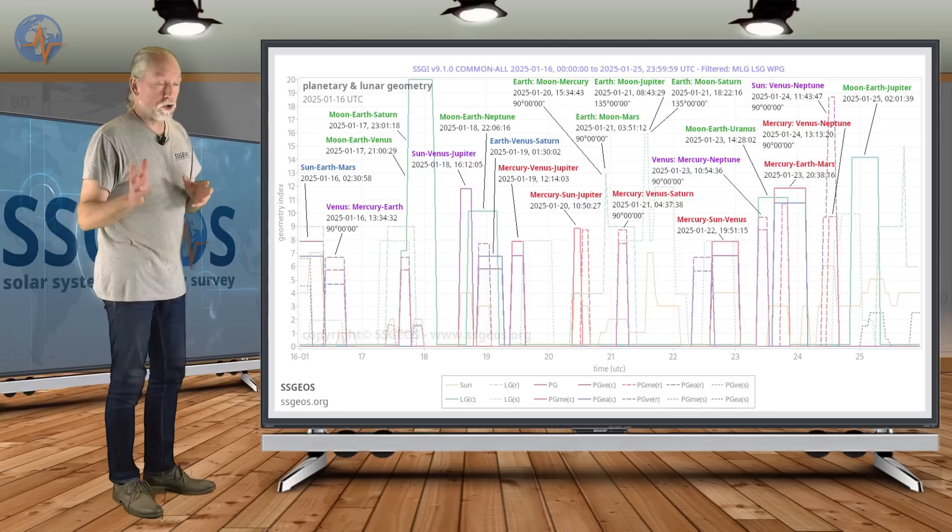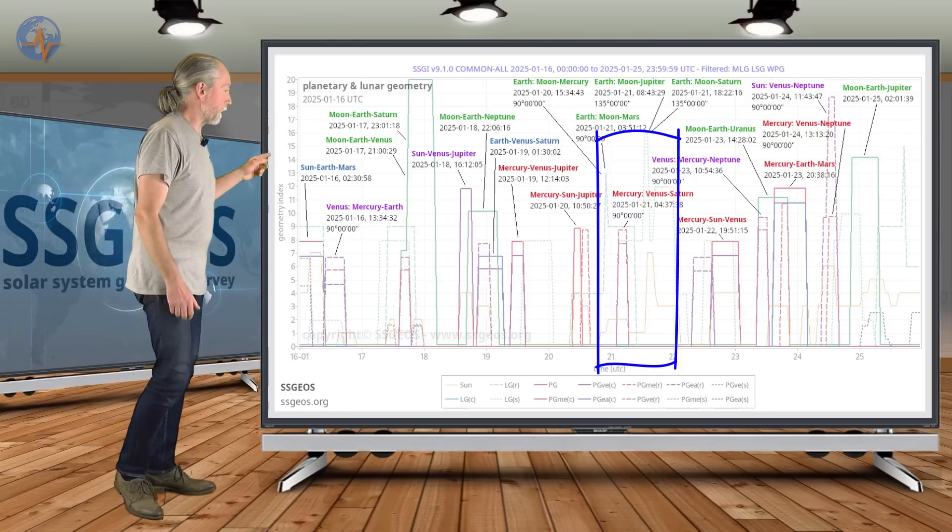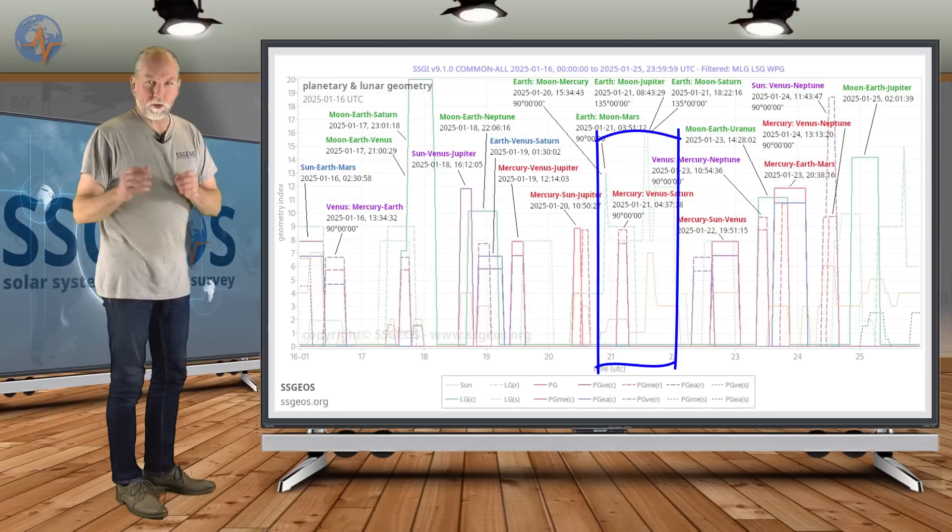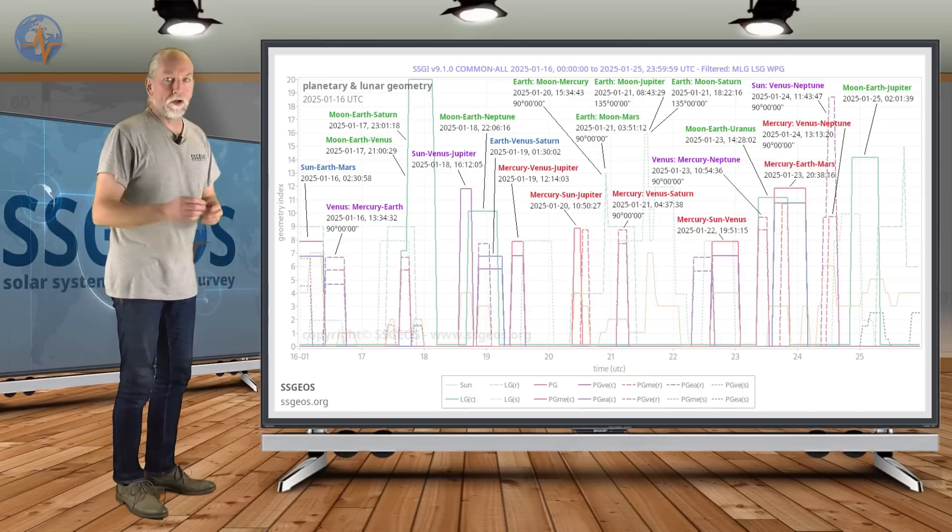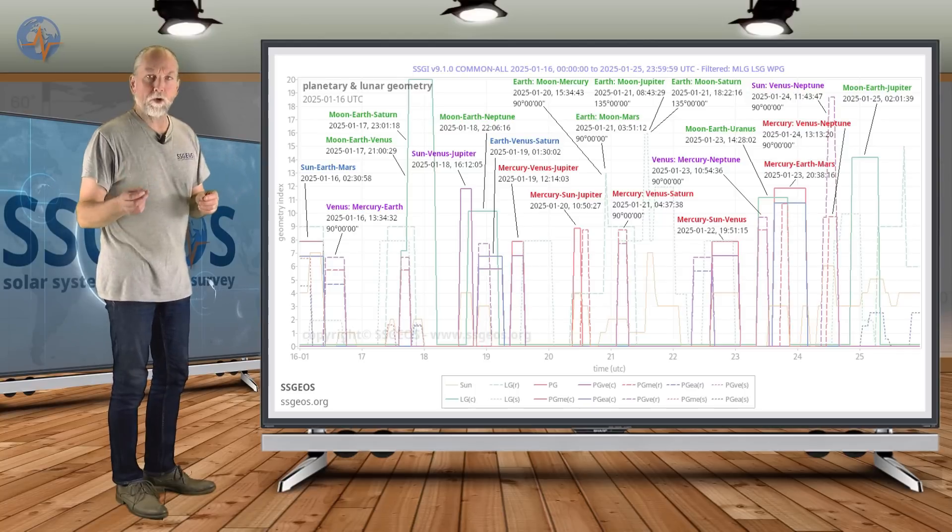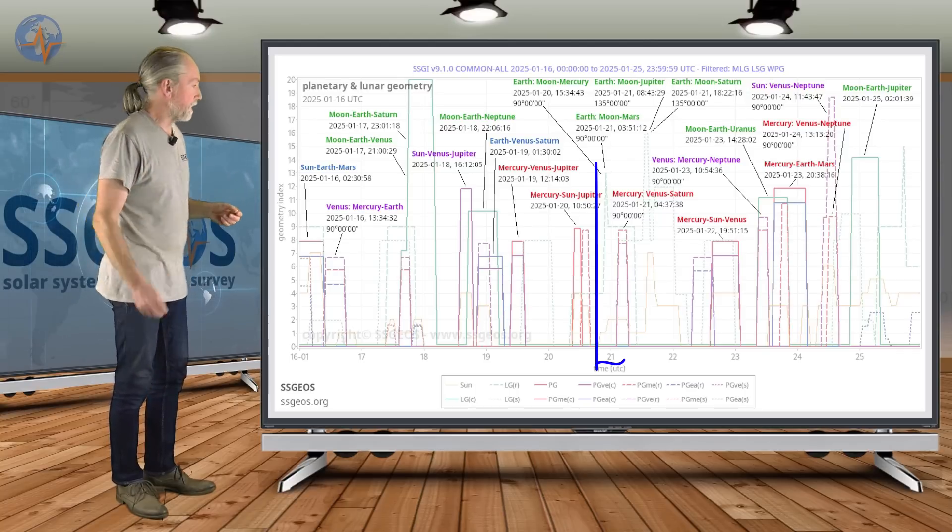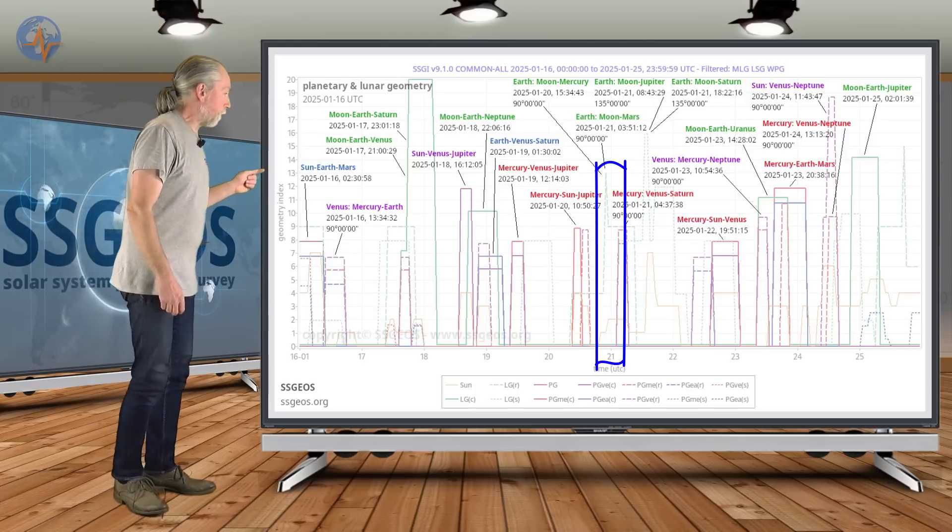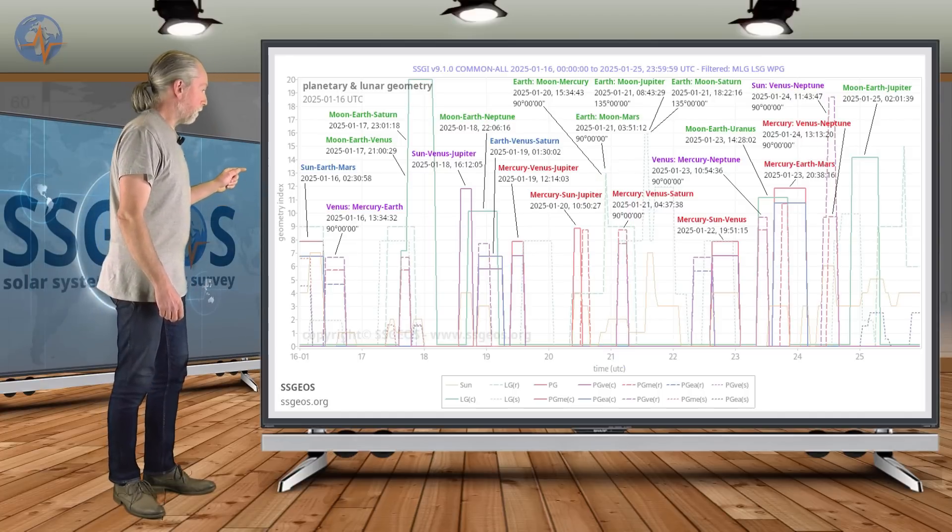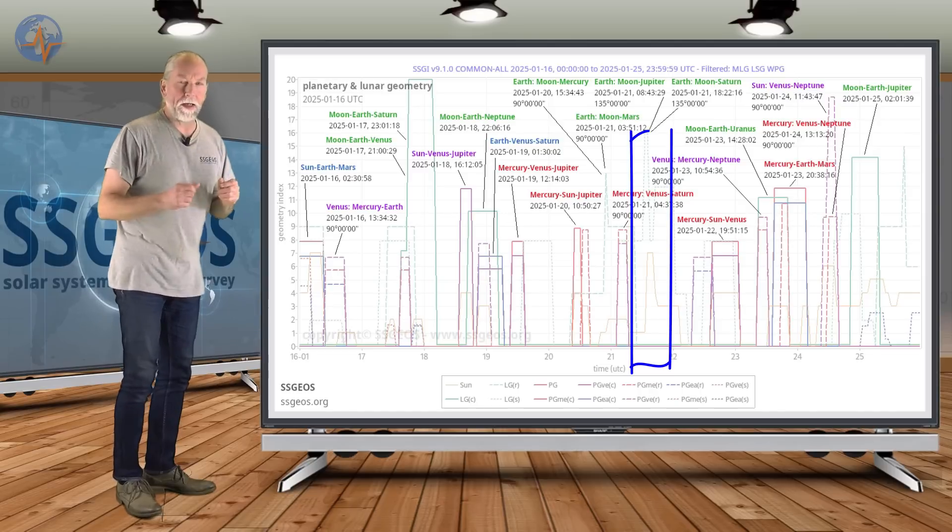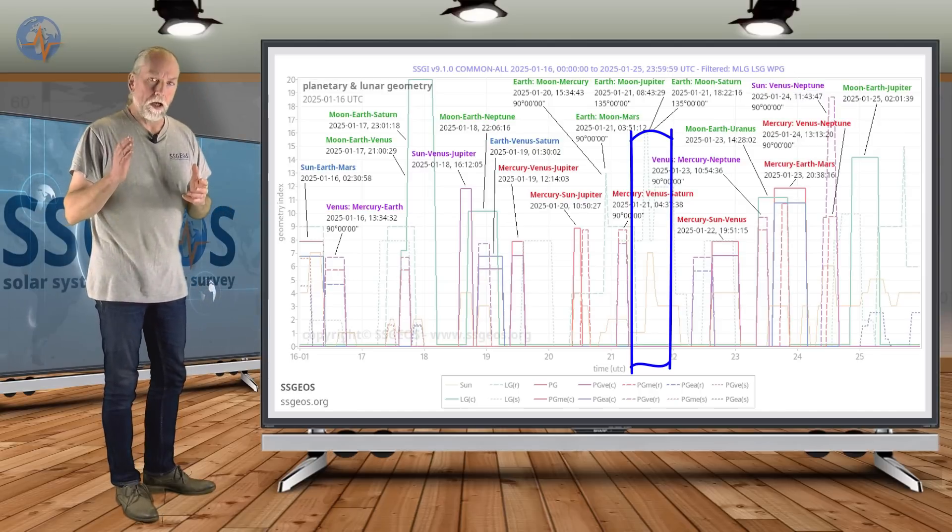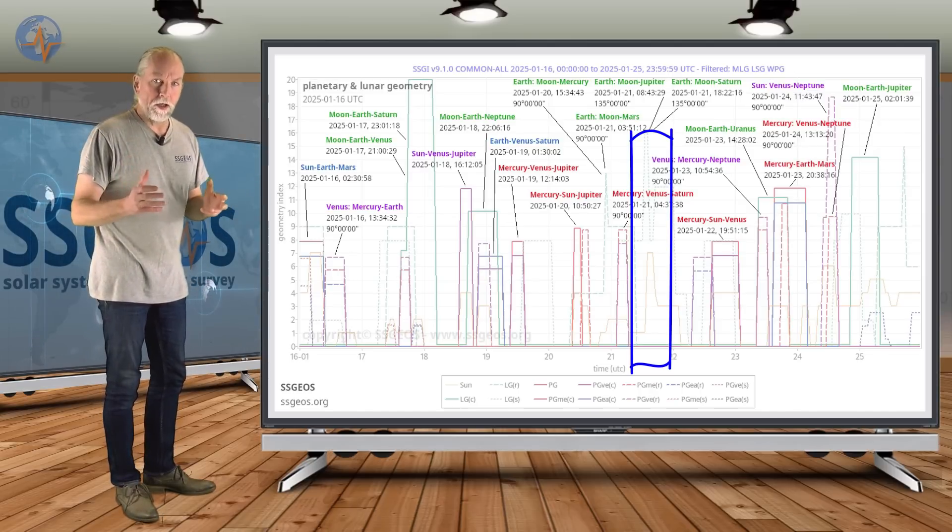But we see also the lunar geometry that precedes that on the 21st. Because Mercury, Earth and Mars will be in a line, there's going to be critical lunar geometry with Mercury and Mars as well. That's 90 degrees geometry and that will be on the 20th, 21st. And that will converge with semi-right angle geometry again with Saturn and with Jupiter. That's critical.